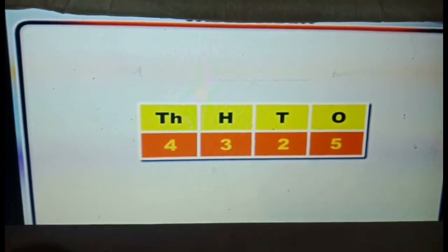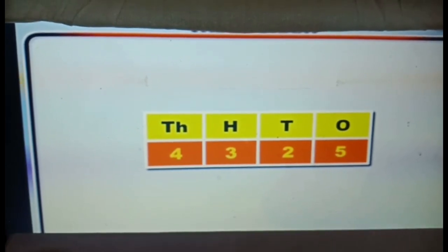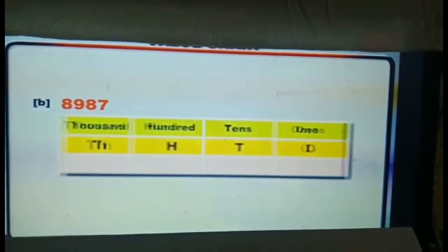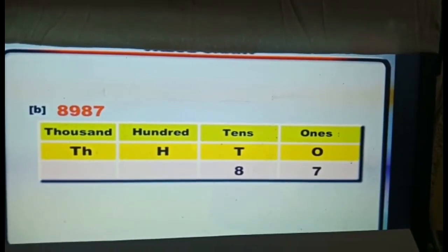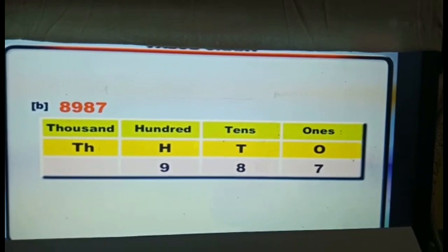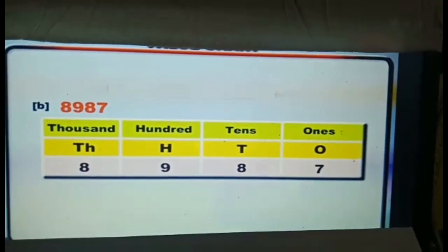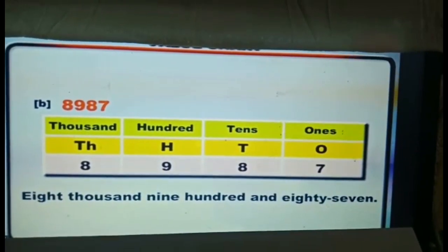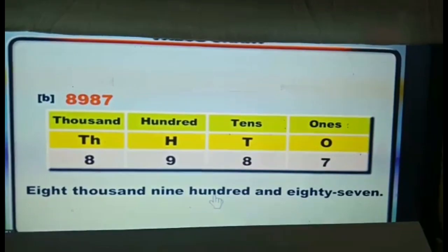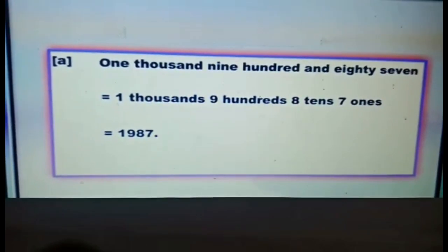Now let us try some examples. Let us arrange this four-digit number in the place value chart and write its number name. Eight thousand nine hundred and eighty-seven: we write 7 in the ones place, 8 in the tens place, 9 in the hundreds place, and 8 in the thousands place. So we have eight thousands, nine hundreds, eight tens, and seven ones.